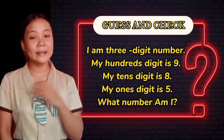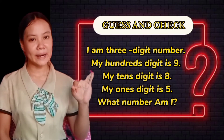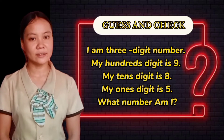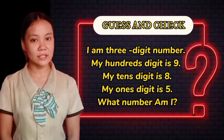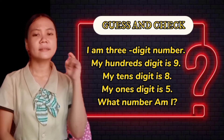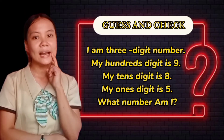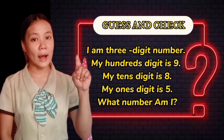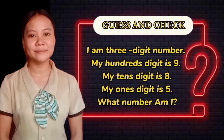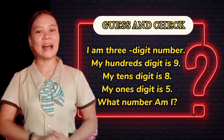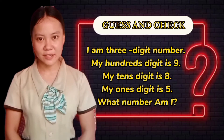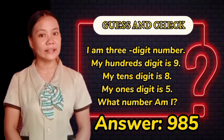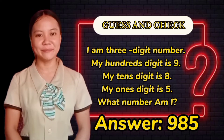I am a three-digit number. My hundreds digit is nine. My tens digit is eight. And my ones digit is five. What number am I? Class, you will answer it as fast as you can. In a one, two, three, go! Okay, you got the correct answer, which is 985. Very good, class.